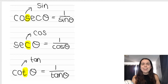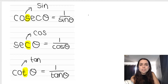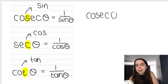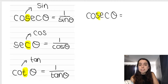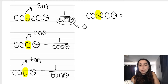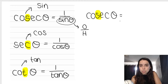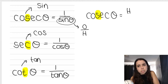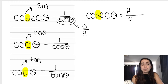Now let's write it out. Cosec of an angle - remember, cosec, third letter S, cosec is the reciprocal of sin. Now if you can recall, sin is opposite over hypotenuse. That means that cosec is hypotenuse over opposite.